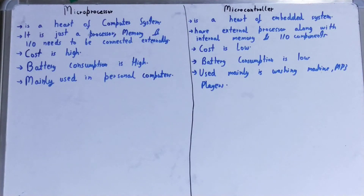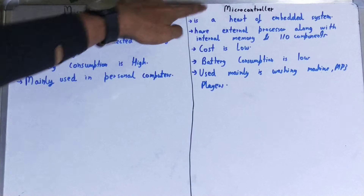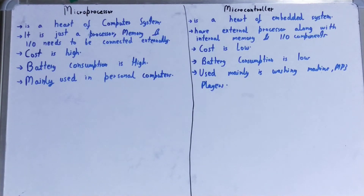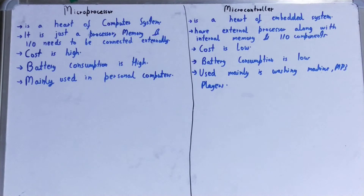Hello friends, in this video I will be helping with the difference between a microprocessor and a microcontroller. A microprocessor is the heart of a computer system. It is used in computers, mobile phones, and such large devices. Whereas a microcontroller is the heart of an embedded system. Embedded systems are systems that generally do a specific task or one or two tasks.